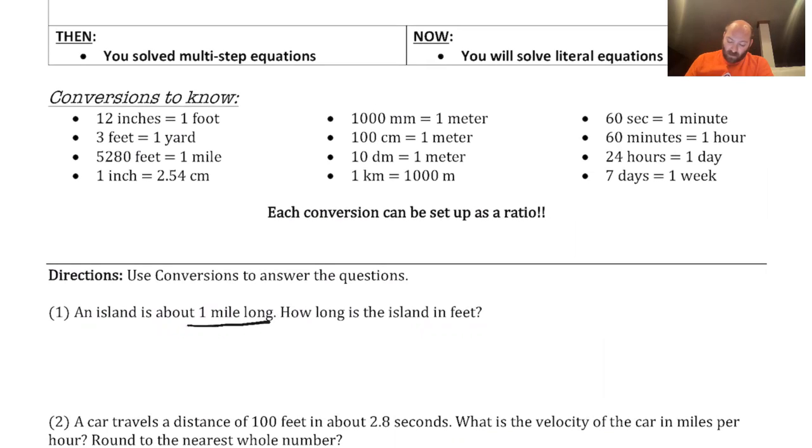An island is about one mile long. How long is the island in feet? When we do our conversions, we're going to start like this. We have one mile over one. That's our starting amount, one mile. To do a conversion, we're going to multiply this by one of our ratios.